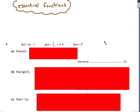Next, let's look at some essential function questions. Again, should be useful for IGCSE paper 4 for the Cambridge 0580 and 0607. We're given some functions: f of x is 2x minus 1, g of x is 1 over x, and h of x is 2 to the power x.